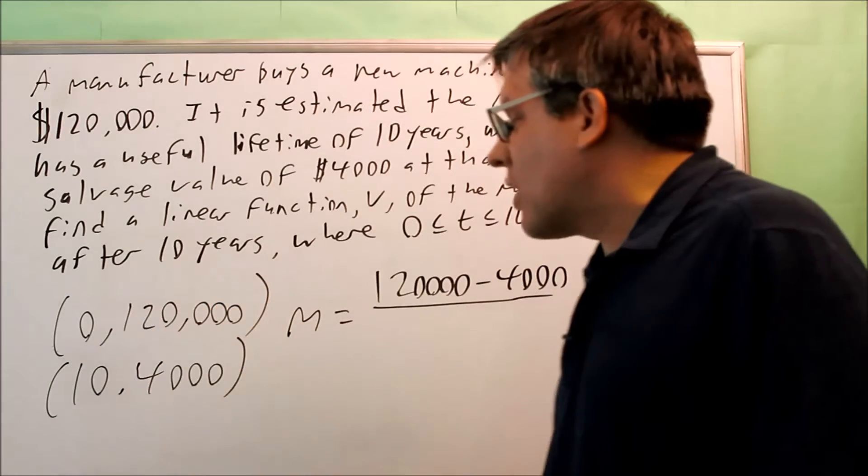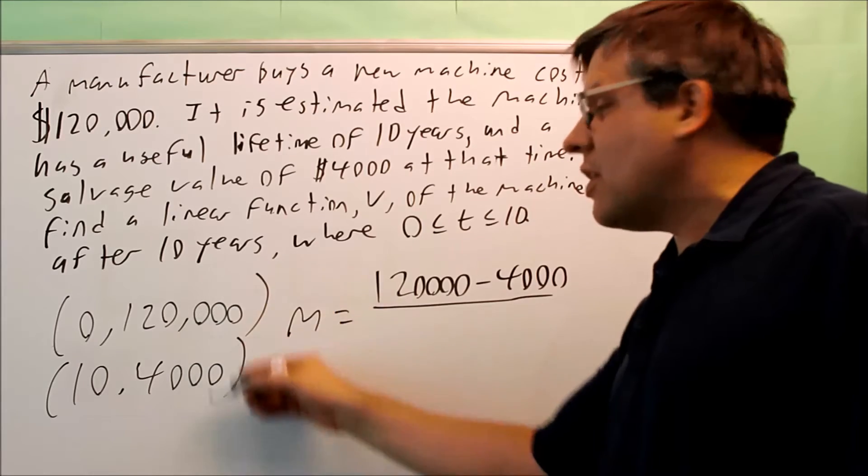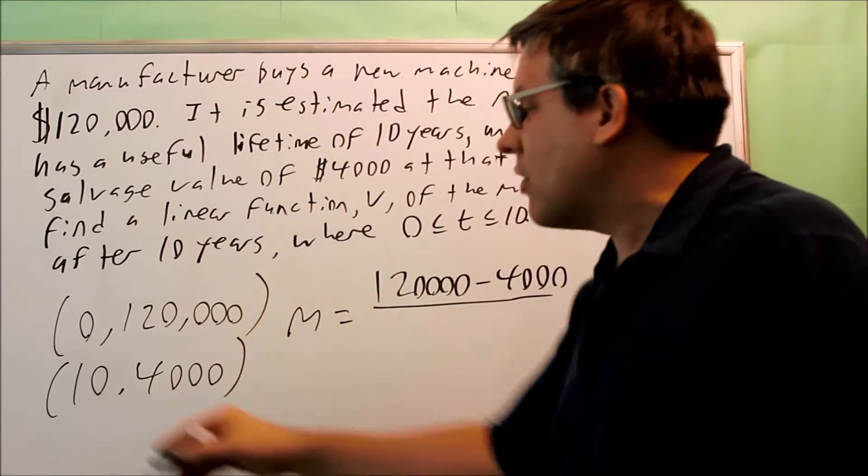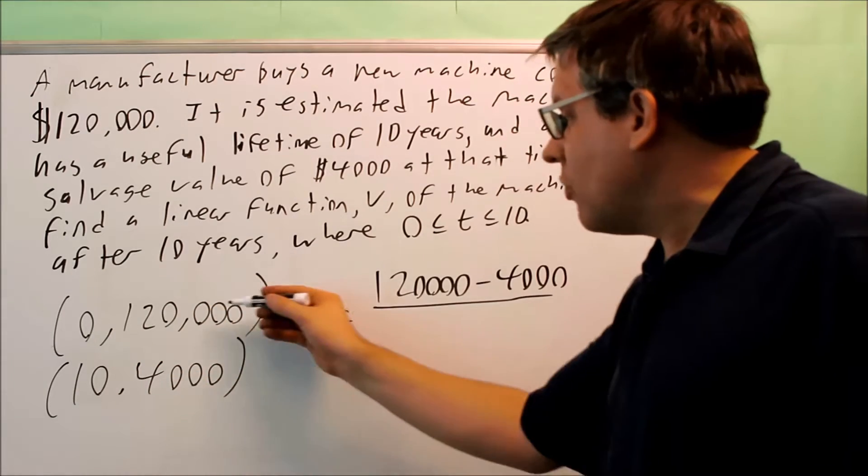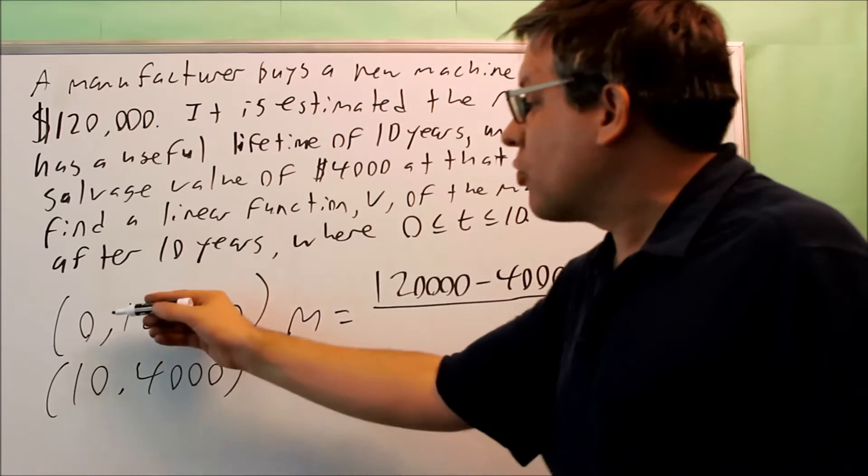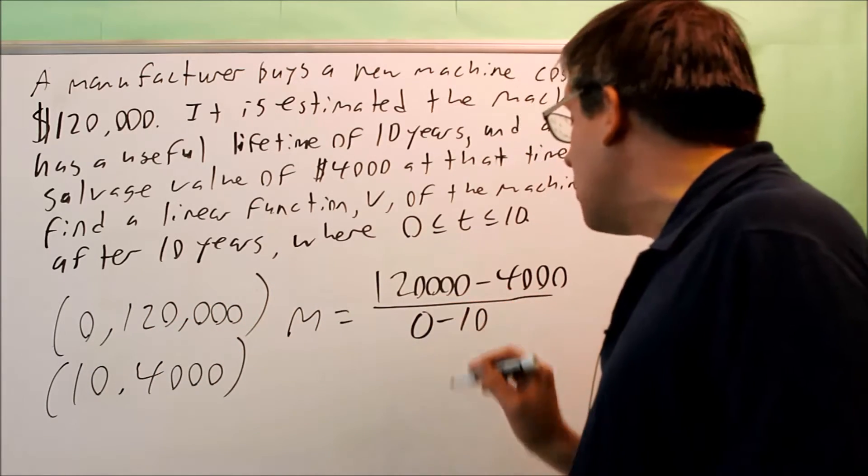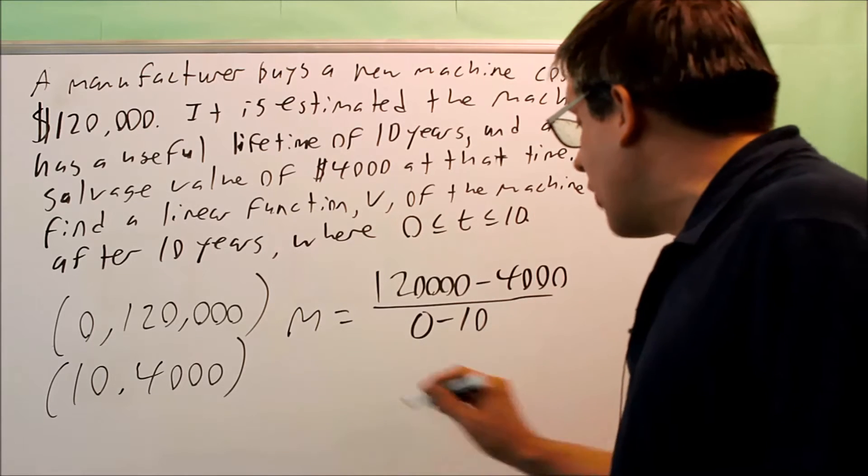Now, however way you subtract these two, you want to make sure you subtract these in the same order. So if I do this minus this, I also want to do zero minus 10. So zero minus 10 is going to be on the bottom. I'm going to simplify this.